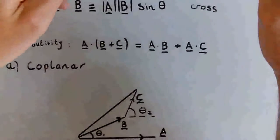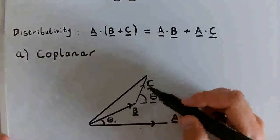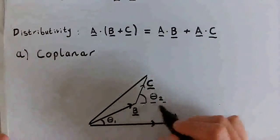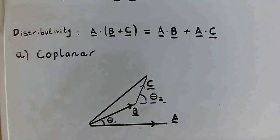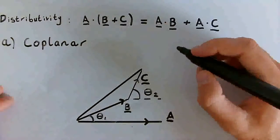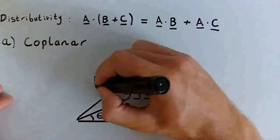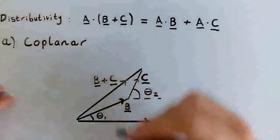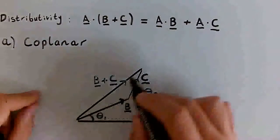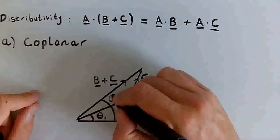I've got a diagram here, because the question wants us to use a diagram. Here's the vector A, here's the vector B, and here's the vector C. The angle between A and B is theta 1, and the angle between C and the horizontal is theta 2. Now it's helpful for our proof to define a new vector, which is the sum of vectors B and C, so we'll call that B plus C. It would also be helpful to define an angle between vectors A and the vector B plus C, and we'll label that theta 3.